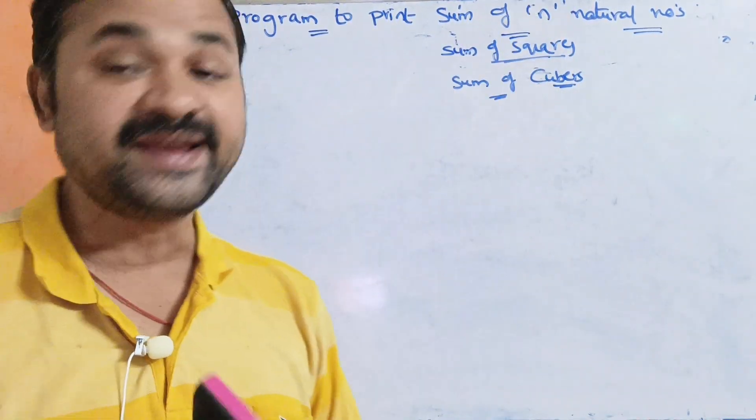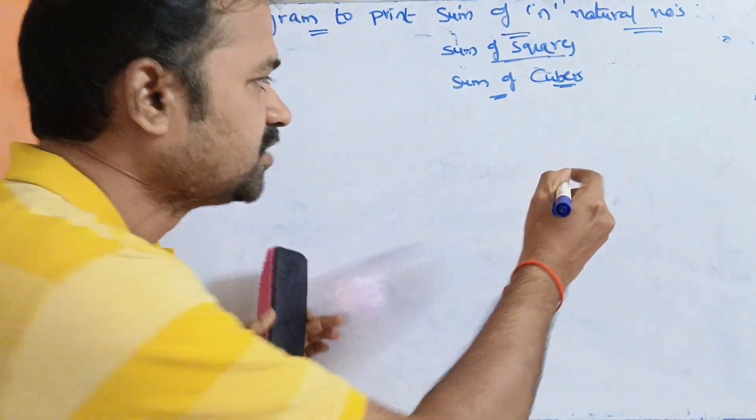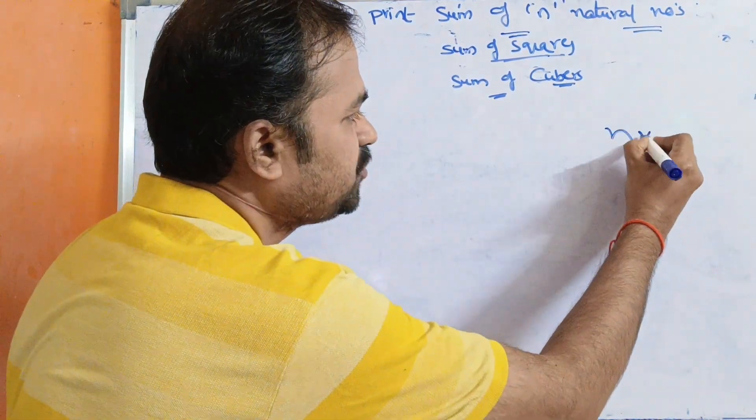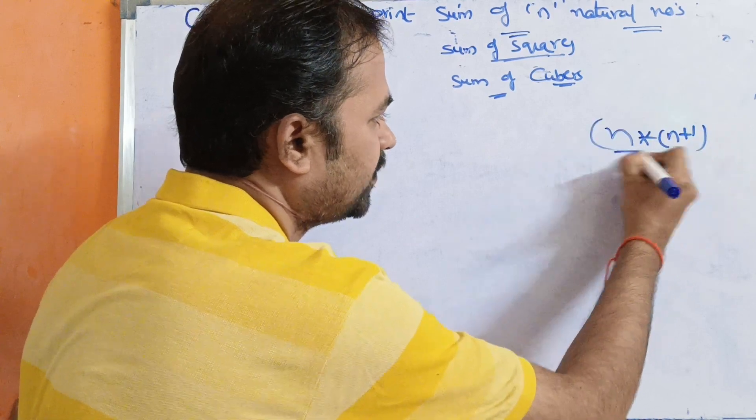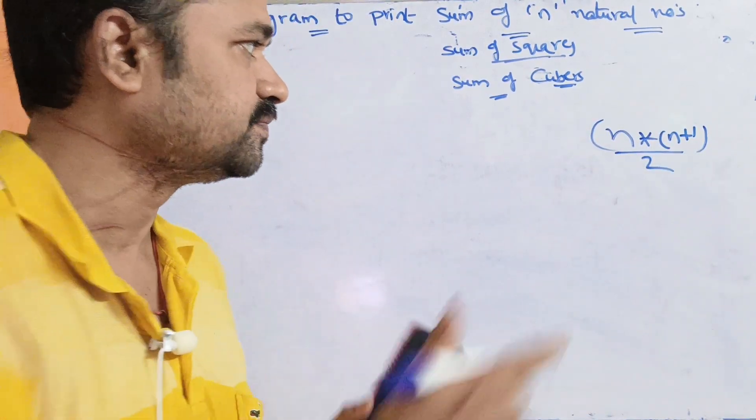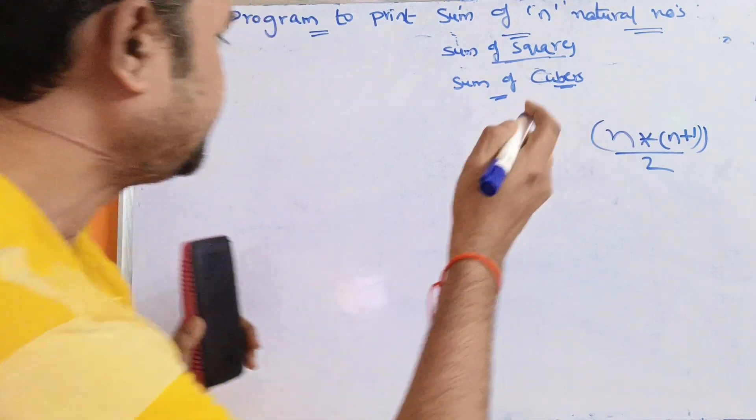First, sum of n natural numbers program. The formula is n into n plus 1 by 2. n into (n+1) / 2. So let us see the program.